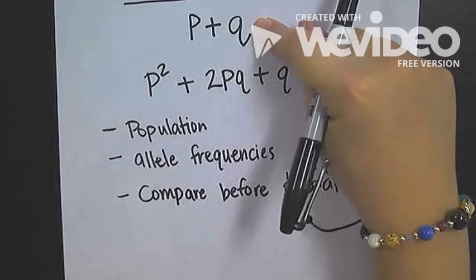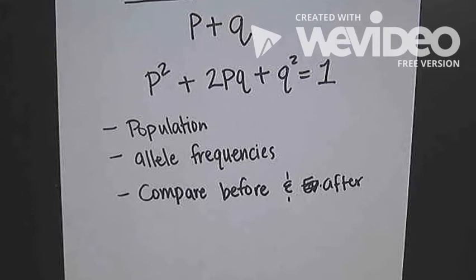P represents our dominant allele, Q represents our recessive allele, and we want to look at if those numbers change.